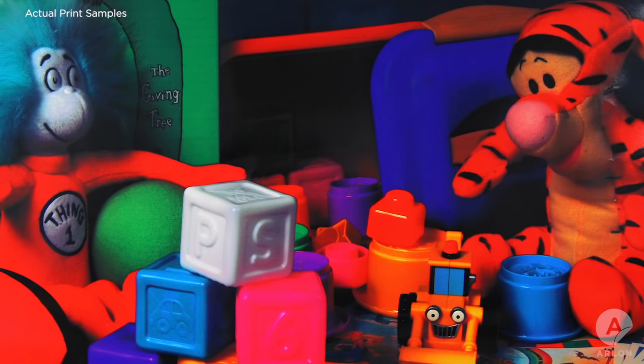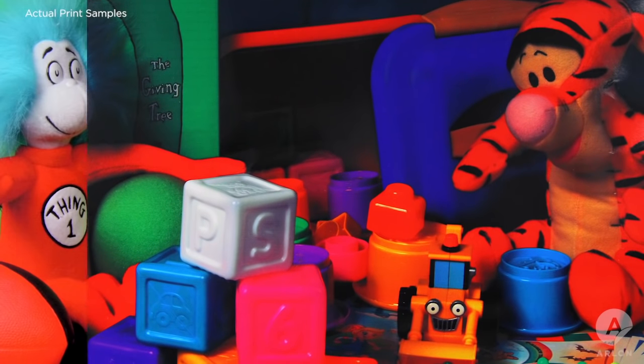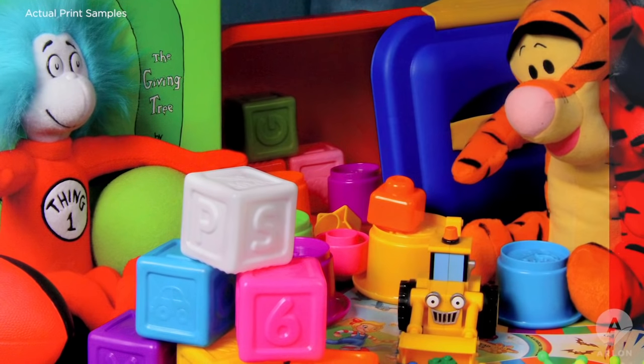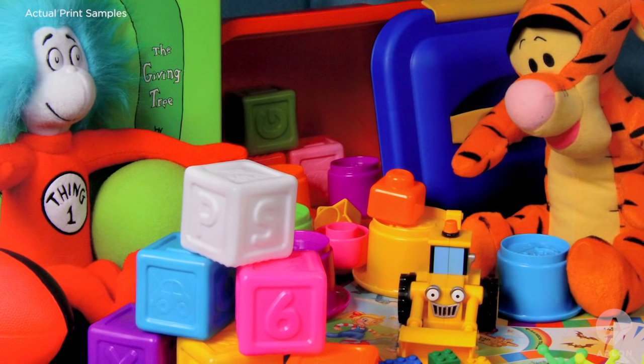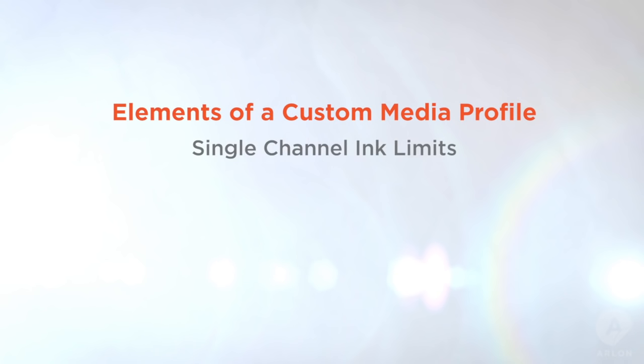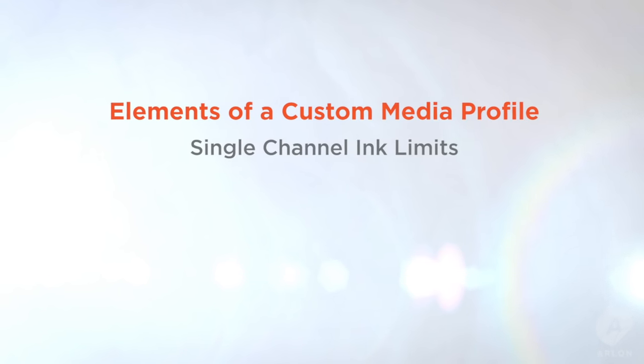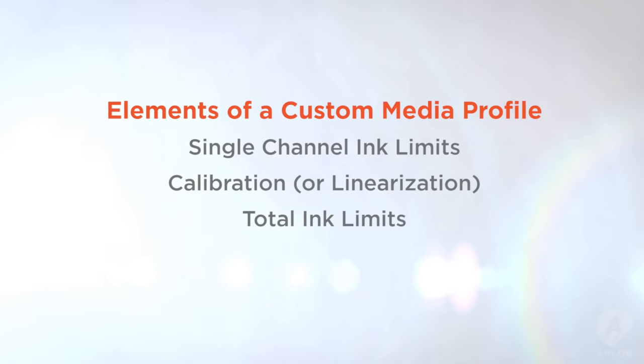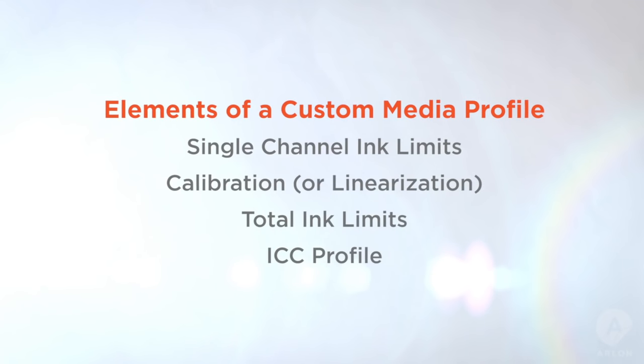Here's an example of a print without ink control and one with full ink control and color management. Custom media profiles have four major parts: single channel ink limits, calibration, total ink limits, and an ICC profile.